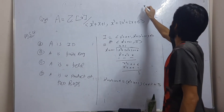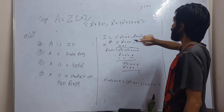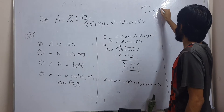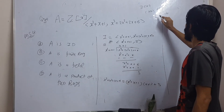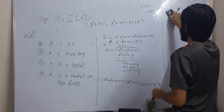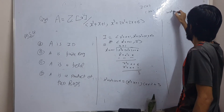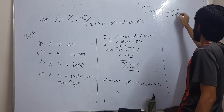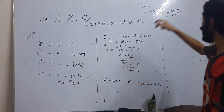Now, this ideal is maximal if and only if it is of the form ⟨p, f(x)⟩ where p is a prime and f(x) is irreducible in Z mod p [x]. Our ideal is of this form, so we check whether x² + x + 1 is irreducible in Z_5[x].